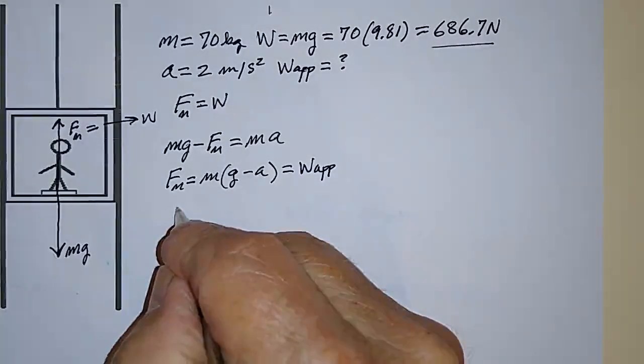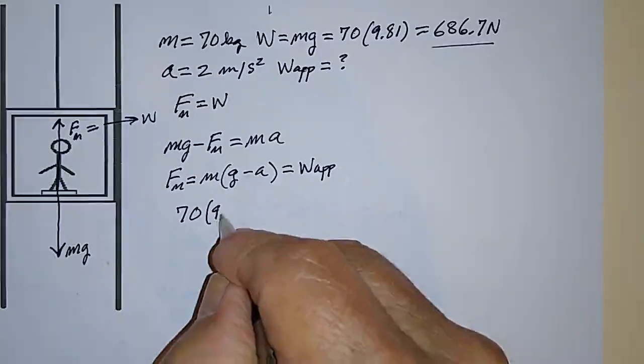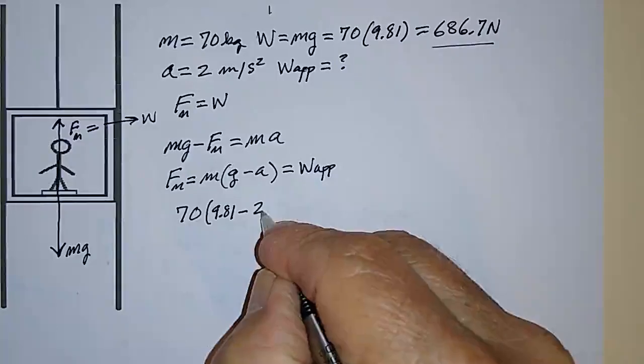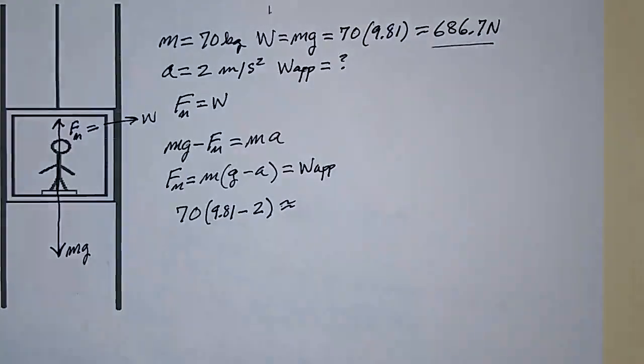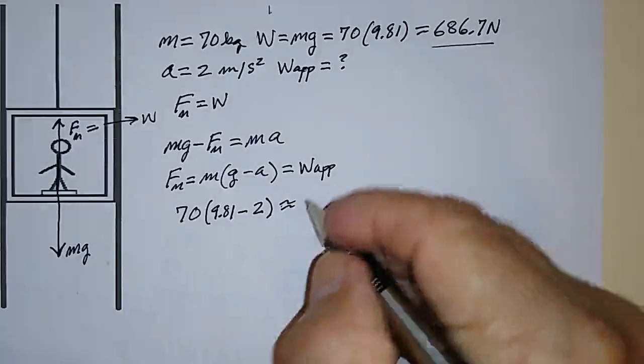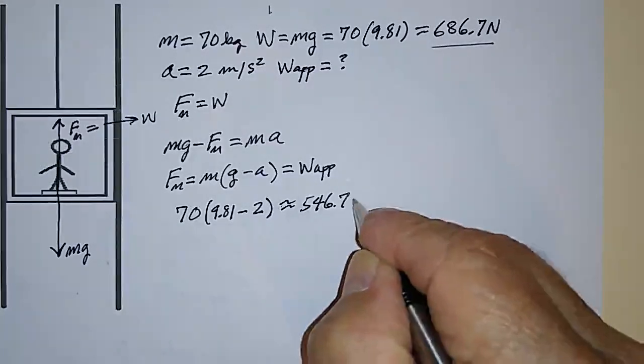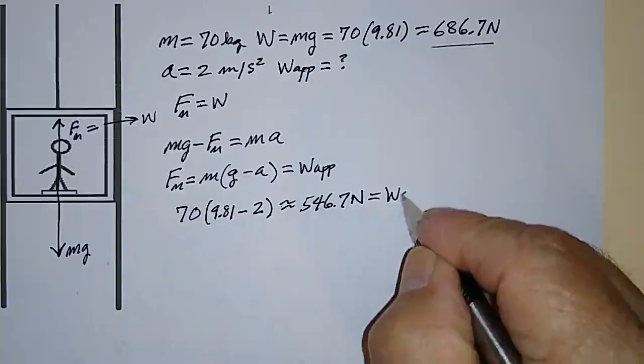That means that his mass, 70 kilograms, times 9.81 minus 2 meters per second squared, is approximately equal to 546.7 Newtons. That's what the apparent weight is.